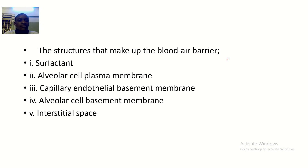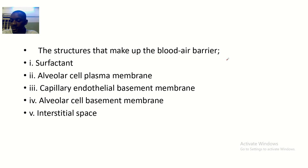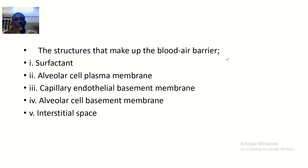The blood-air barrier is basically about how gas is exchanged in the lungs. They're talking about all those divisions of the trachea — and I think the last one should be the alveoli — and how gas is exchanged at that level.